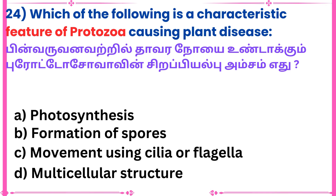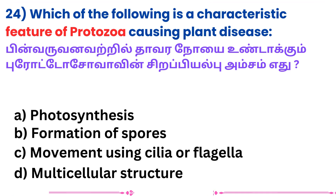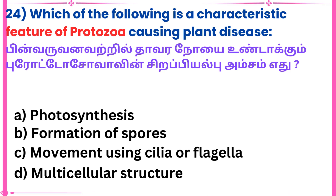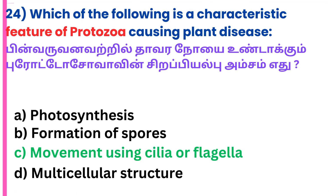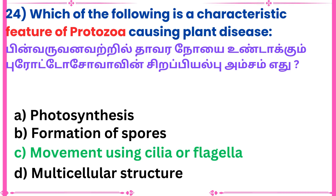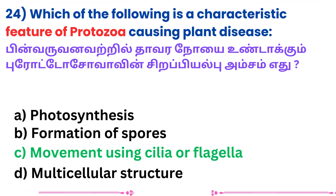Question 24: Which of the following is a characteristic feature of protozoa causing plant disease? Answer: Movement using cilia or flagella.